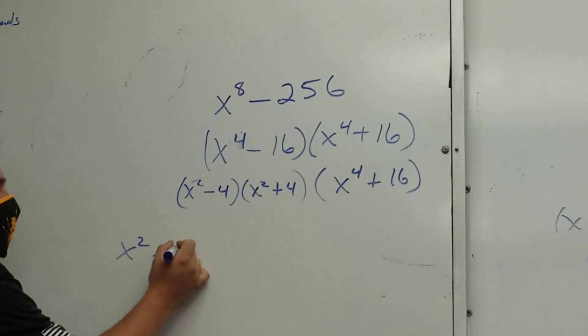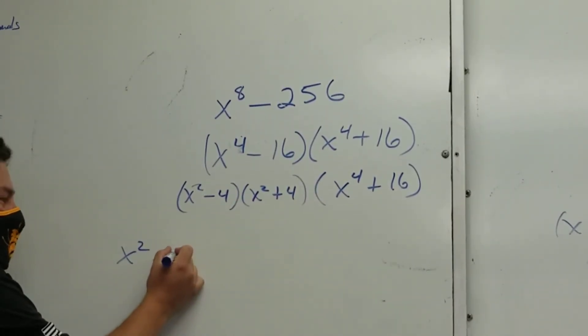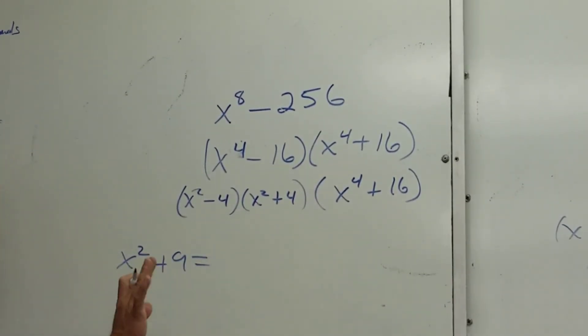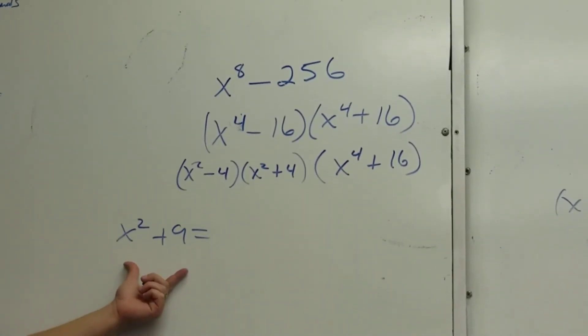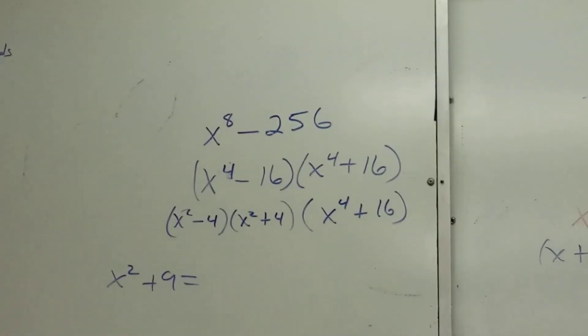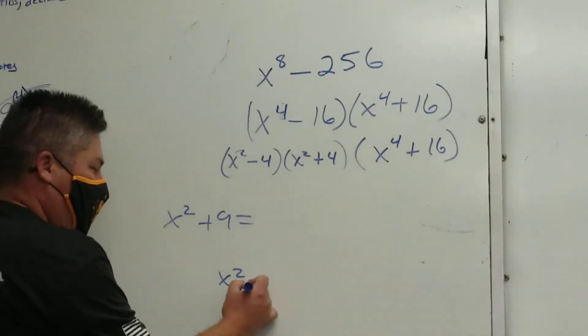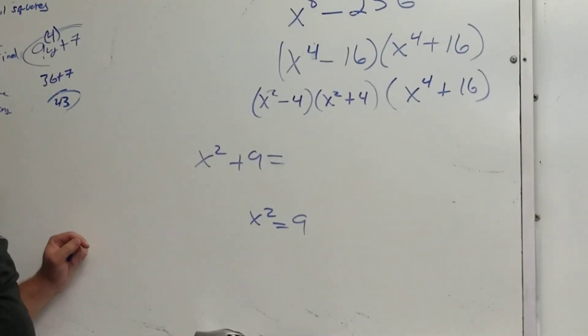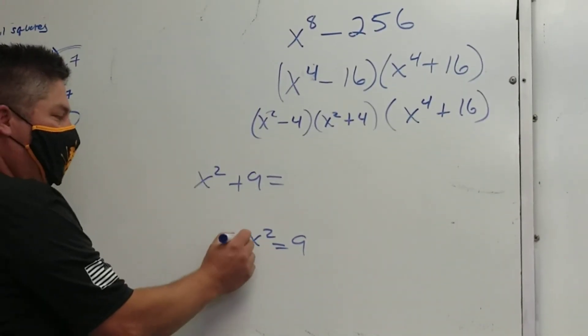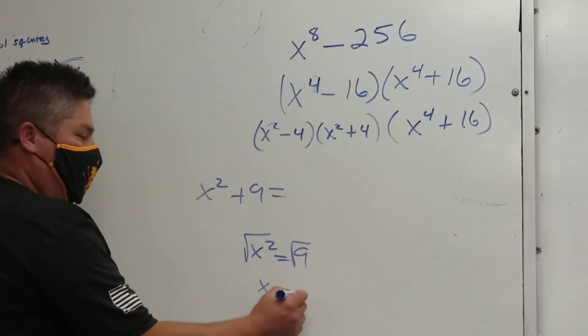Let's say I had x squared. Not x to the fourth, but just x squared. Plus, let's say, 9. Okay, just for fun. Solve this. How do I solve it? How would you solve this, by the way? x squared equals negative 9. How would I solve that? Take the what of both sides. Square root, and I end up with x equals what? Plus or minus, right? What? 3.